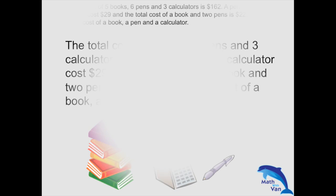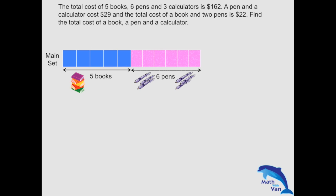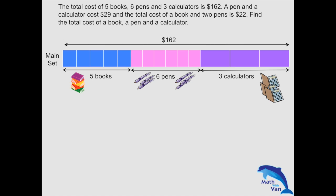I'll call this the main set. The main set consists of 5 books, 6 pens, 3 calculators, totaling $162. Subset one will be 1 pen and 1 calculator costing $29. Subset two will be 1 book plus 2 pens costing $22.